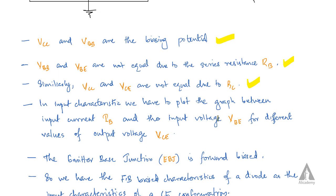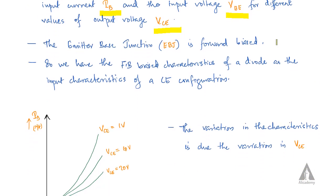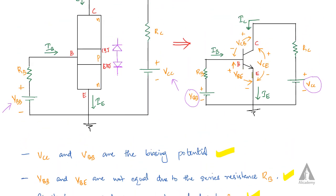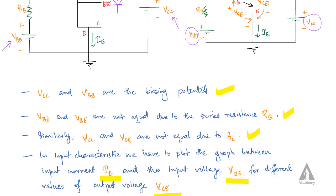The input characteristics is the graph plotted between input current IB and input voltage VBE for different values of output voltage VCE. In the common emitter configuration, the emitter-base junction is forward biased — the N-type emitter is connected to the negative terminal and the P-type base is connected to the positive terminal.